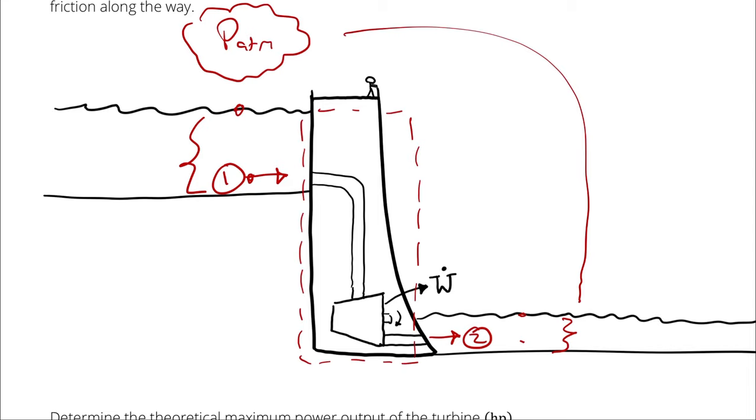but if we had any change in kinetic energy, it would presumably be caused by our change in elevation. The potential energy is probably converted to enthalpy and kinetic energy before it's converted into shaft work.